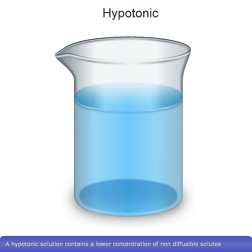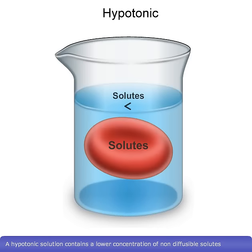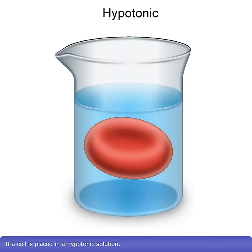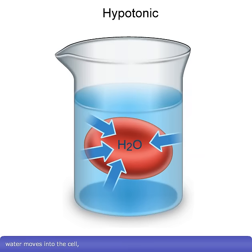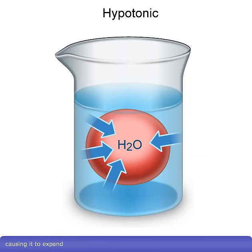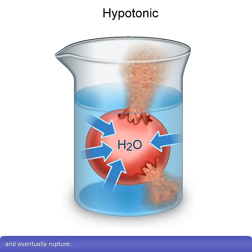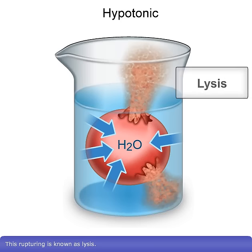A hypotonic solution contains a lower concentration of non-diffusible solutes and therefore a higher water concentration compared with the cytosol within a cell. If a cell is placed in a hypotonic solution, water moves into the cell, causing it to expand and eventually rupture.